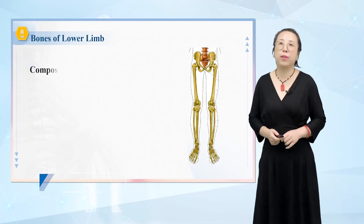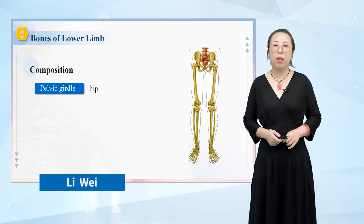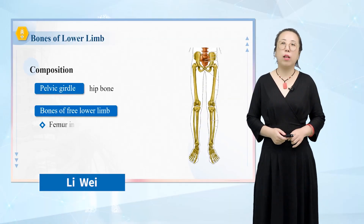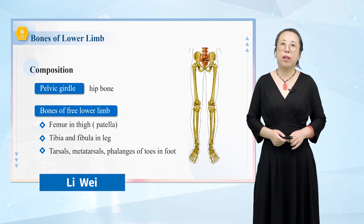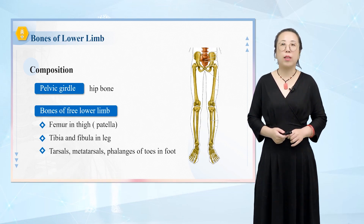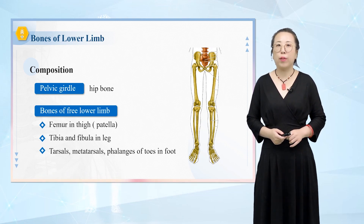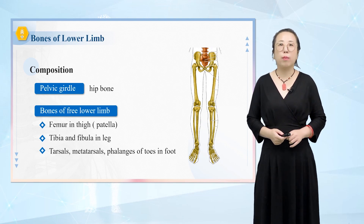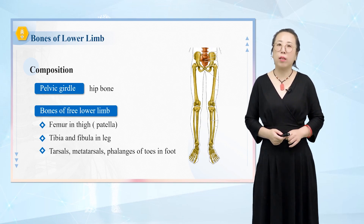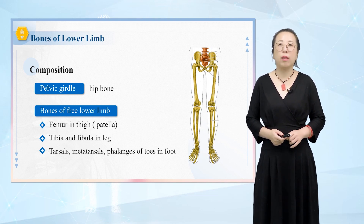Lower Limb Bones. The lower limb bone, that is the hip bone, is an irregular bone that hails from the ilium, ischium, and pubic bone.